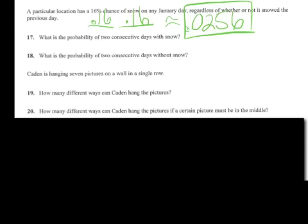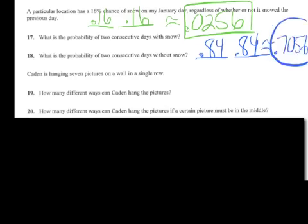Okay, switching gears on 18. What is the probability two consecutive days without snow? Okay, day one and day two. Without snow is its complement. So it either snows or doesn't snow. So without snow would be an 84 percent chance, without snow an 84 percent chance. This is going to give us approximately .7056. So we have about a 70.56 percent chance we have two consecutive days without any snow.